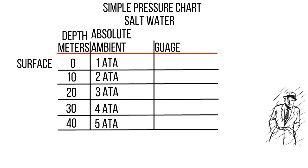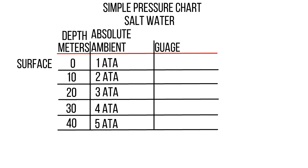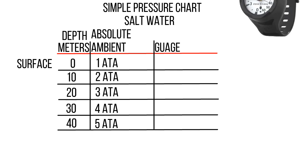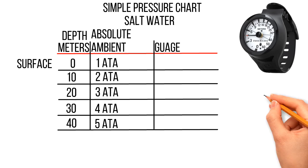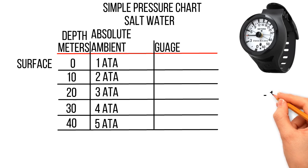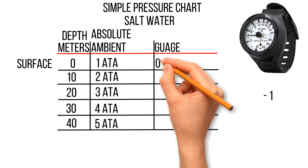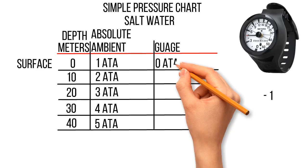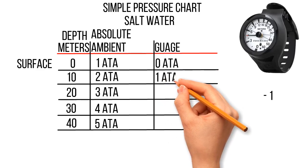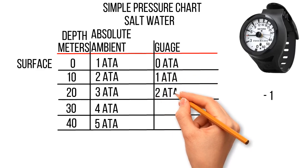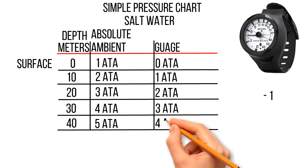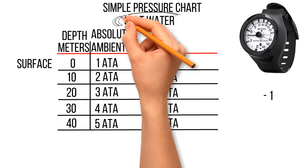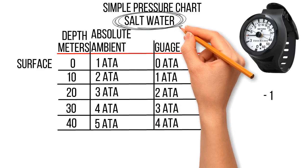Now let's look at gauge pressure. The gauge we're talking about is our depth gauge, which we want to read 0 at the surface. So we subtract 1 from absolute or ambient to find our gauge pressure. At the surface our gauge should read 0 atm, at 10 metres 1 atmosphere, at 20 metres 2 atm, at 30 metres 3 atm, and at 40 metres 4 atm. And that is, of course, salt water.